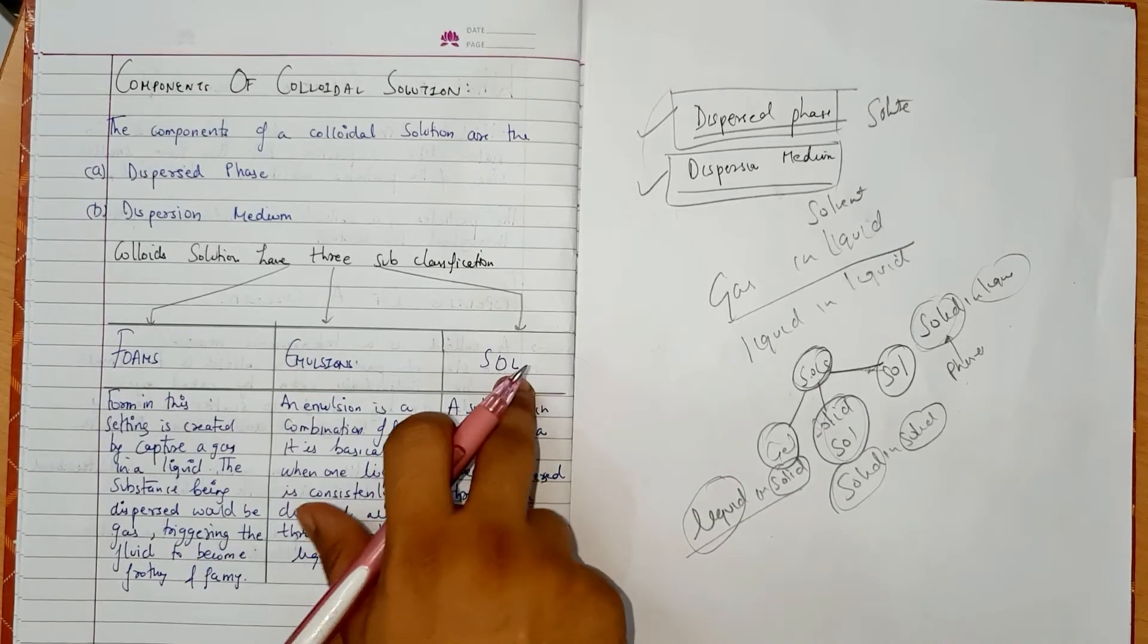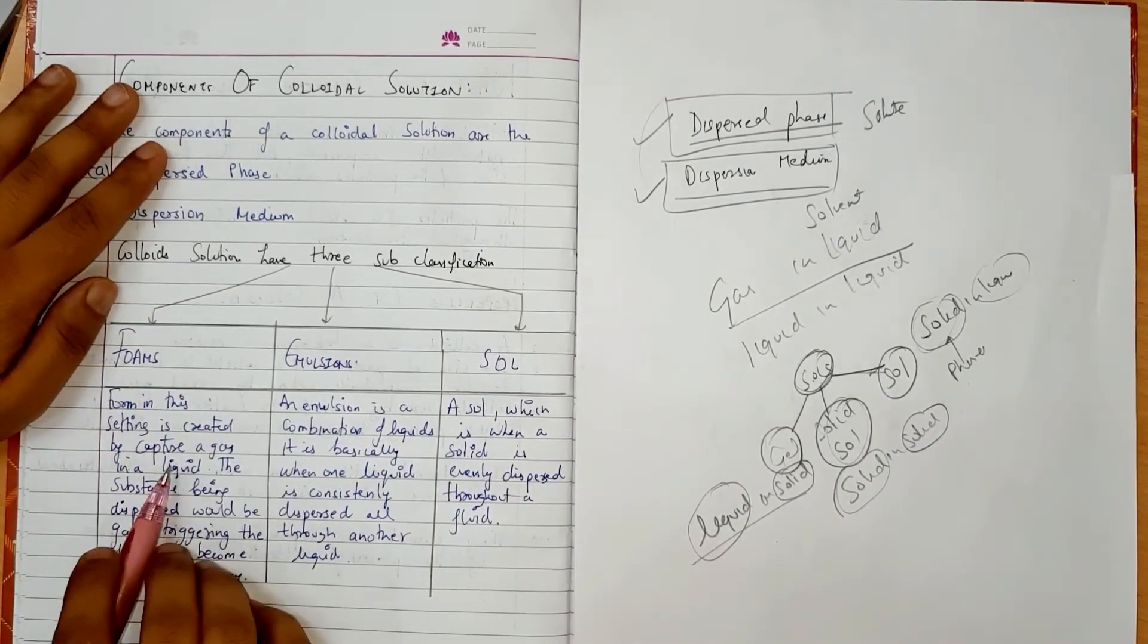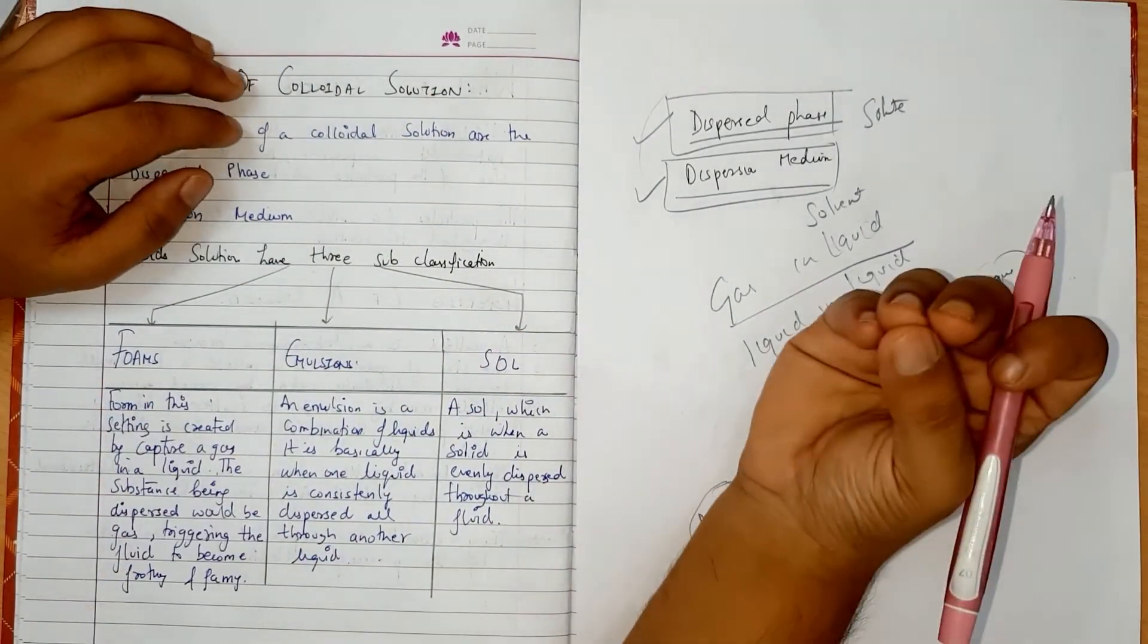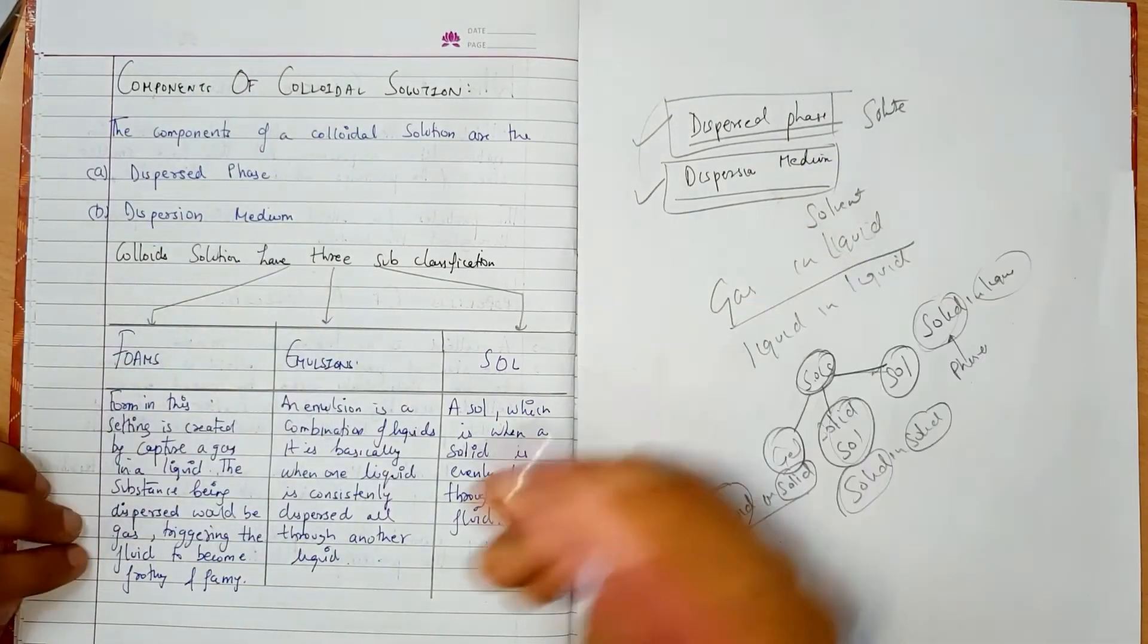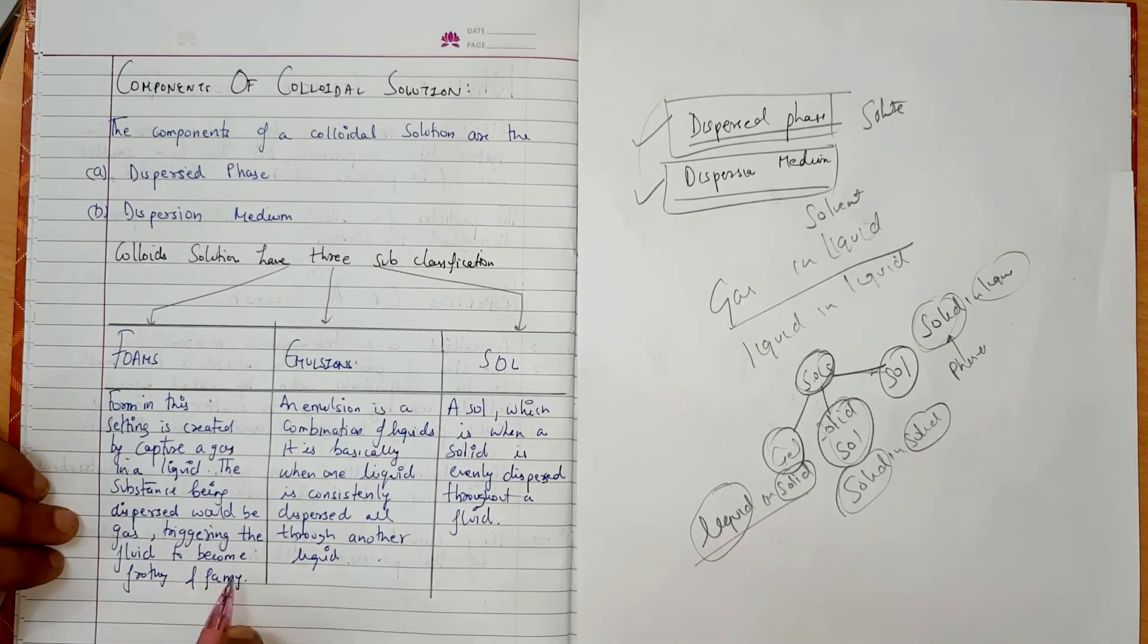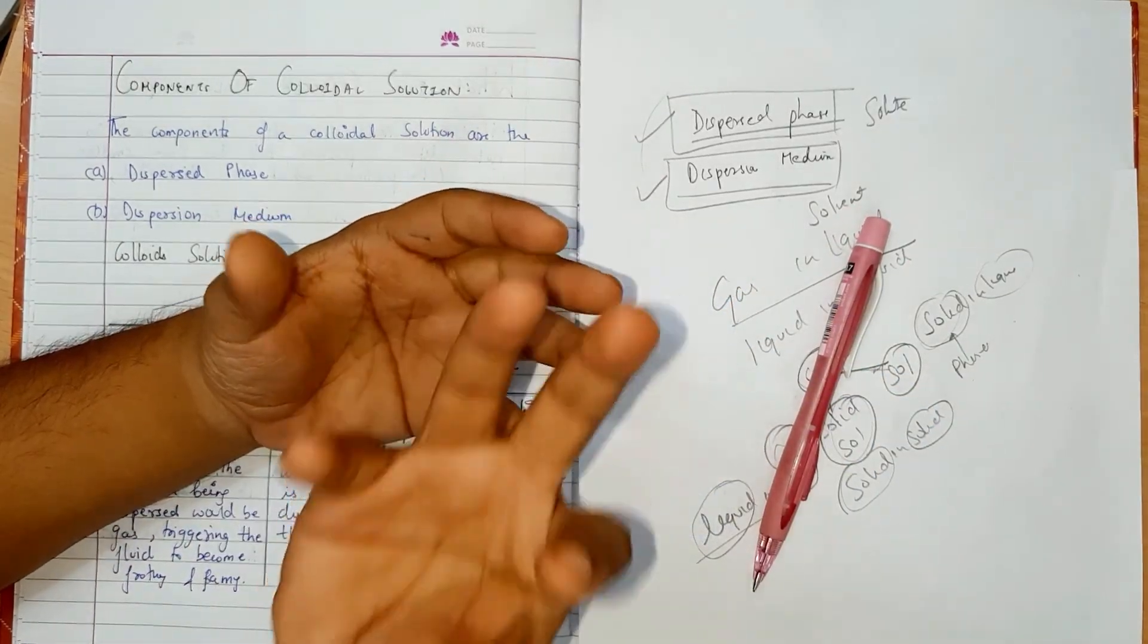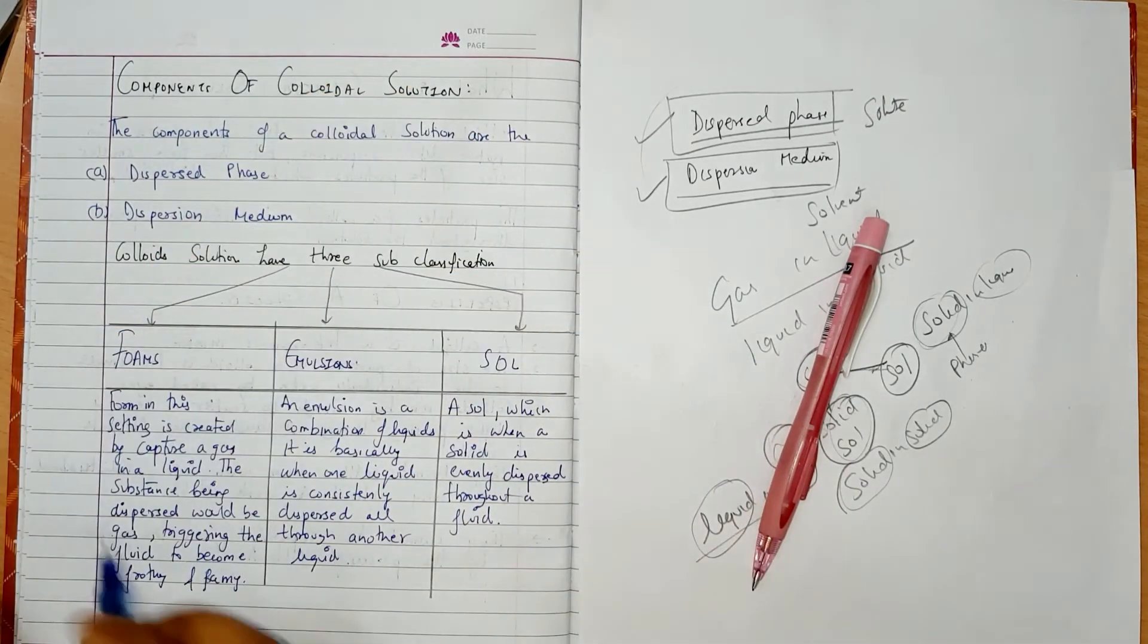Dispersed phase and dispersion medium. In case of gel, dispersed phase is liquid and dispersed medium is solid. In case of solid sol, dispersed phase is solid and dispersion medium is also solid. In case of sol, solid is dispersed phase and liquid is dispersion medium. What is foam? When gas is dispersed phase and dispersed medium is liquid, triggering the fluid to become floaty.